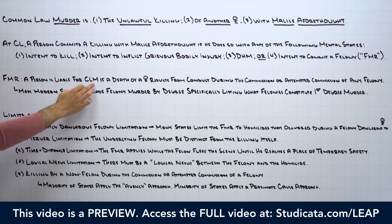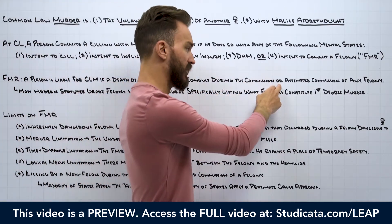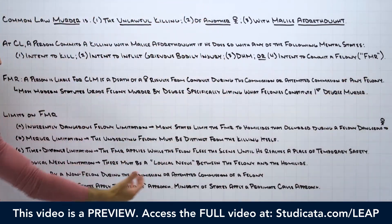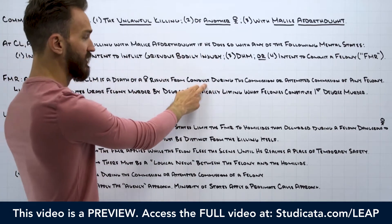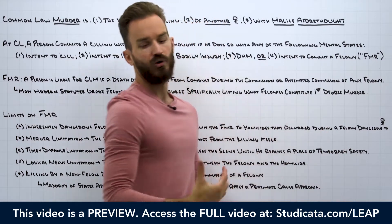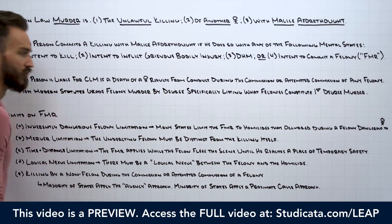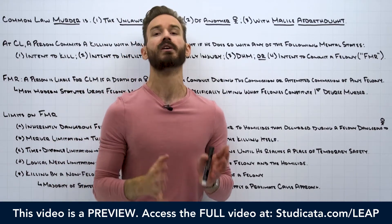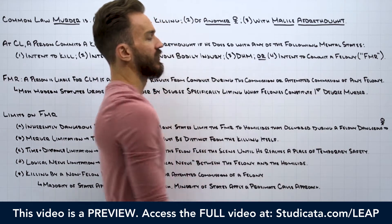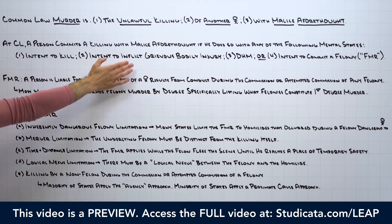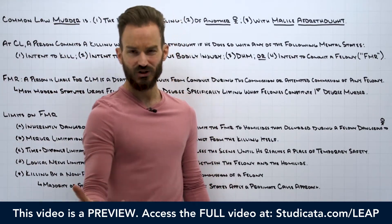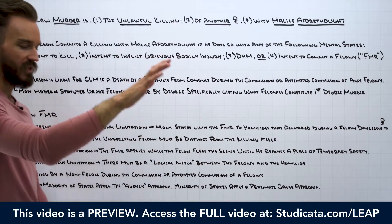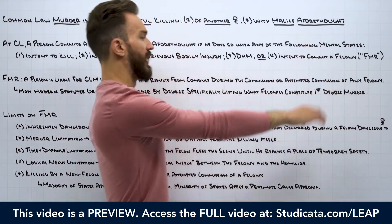A person is liable for murder if a death of a human being results from conduct during the commission or attempted commission of any felony. Robbery is a felony, our victim died as a result of the defendant's conduct during the commission of a robbery. So our starting point rule would be: yes, this defendant is liable for murder under the felony murder rule, even though they may not have had an intent to kill or inflict grievous bodily injury. Under the felony murder rule, that's still murder — not manslaughter, not something mitigated down — it is murder.